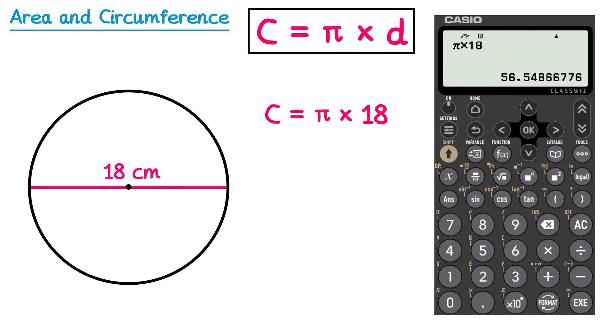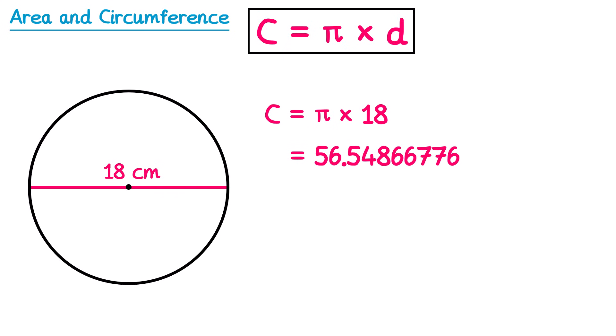So the answer to this question is 56.54866776. An exam question might ask you to round this to a certain degree of accuracy — for example, one decimal place, which would give 56.5. We also need to give units. Since the circumference is the distance around the outside of the circle, its units will also be a length, so this one will be in centimetres.